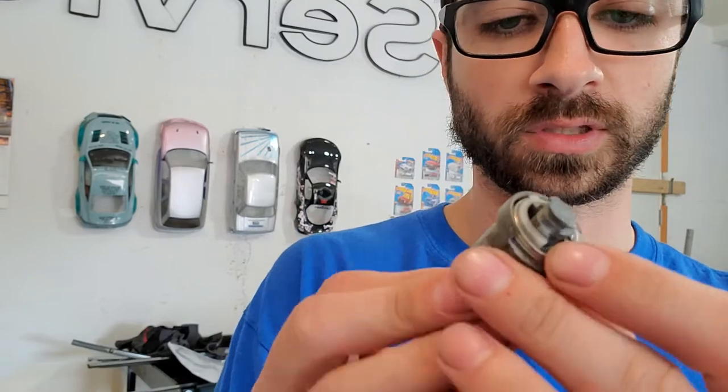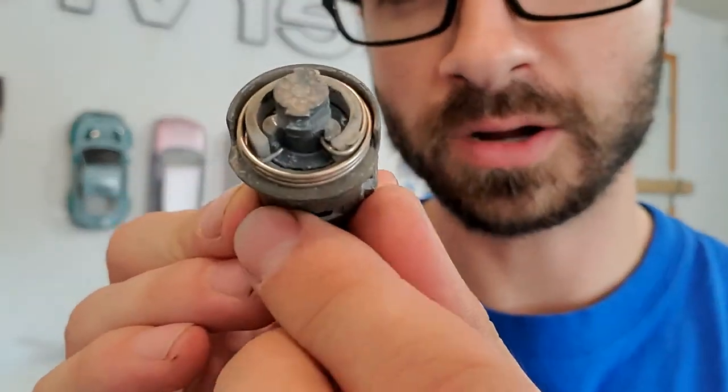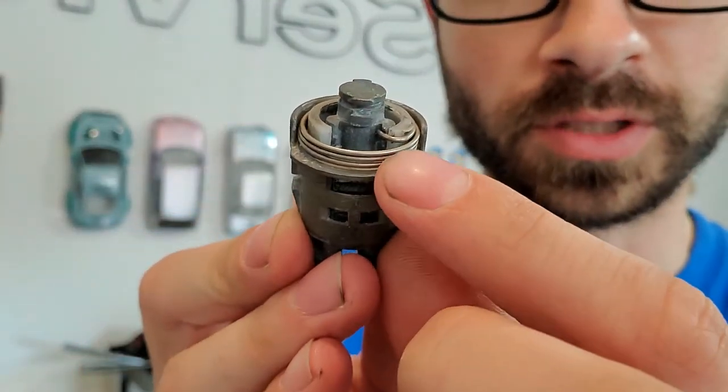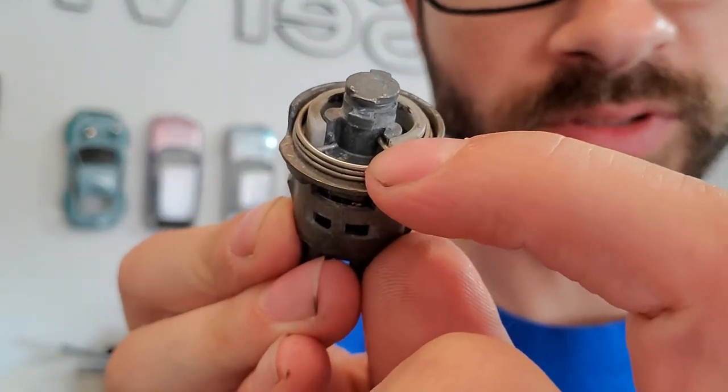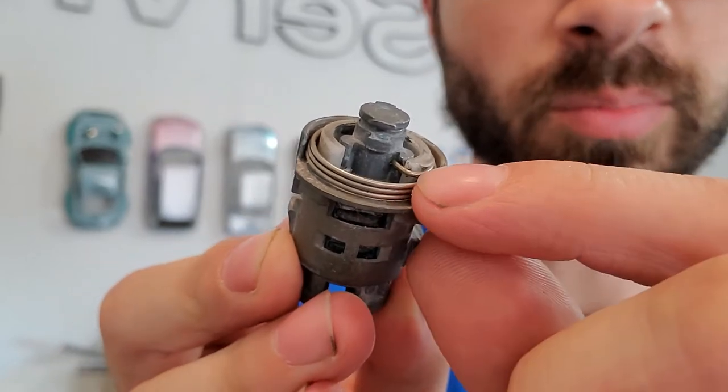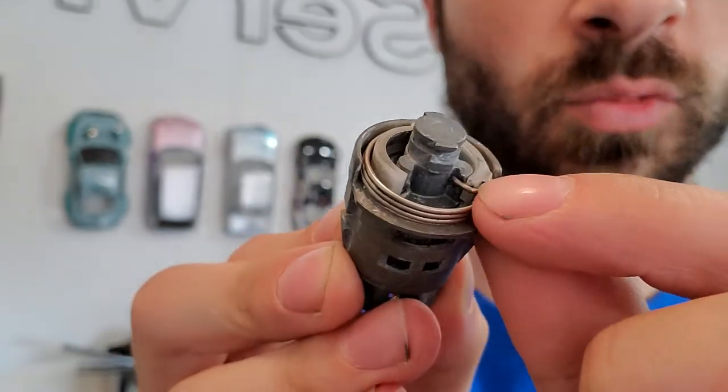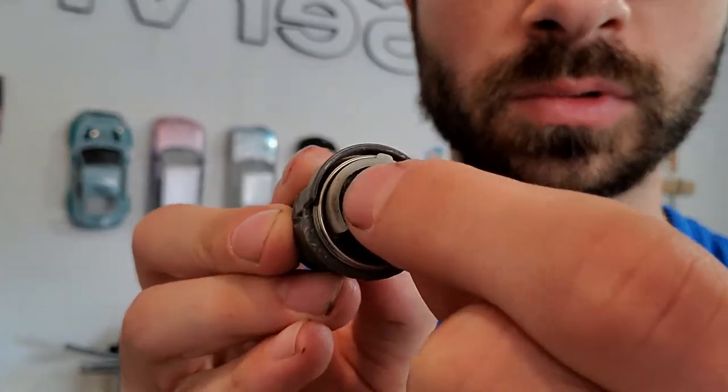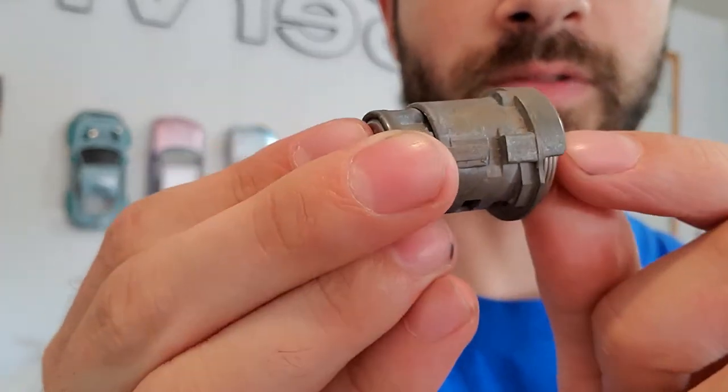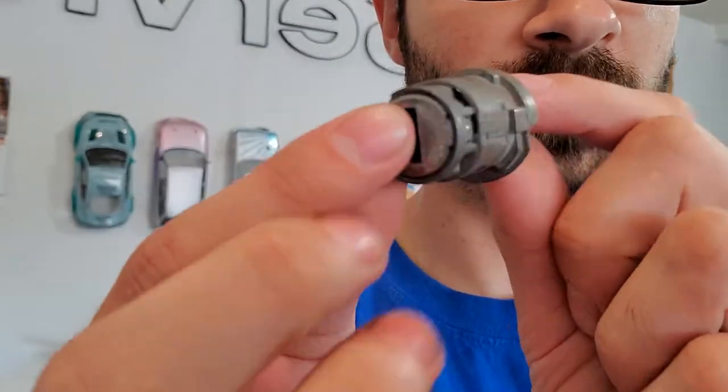First things first, once you get the cylinder out, you're going to want to unhook this spring. There's two little sections there that the spring will sit on and you're just going to pry it up. You'll take this little white piece out with it and that will allow us to pull the actual cylinder out of the whole piece here and that will expose the little keys. So I'm going to flip the camera around, give you a close up, and show you what the next steps are.